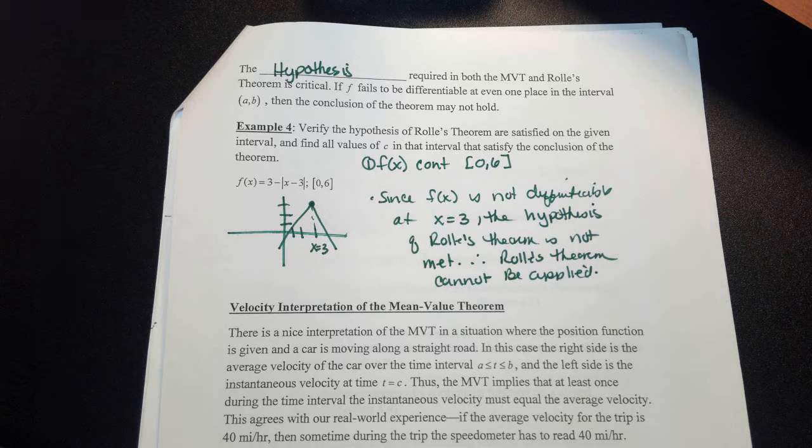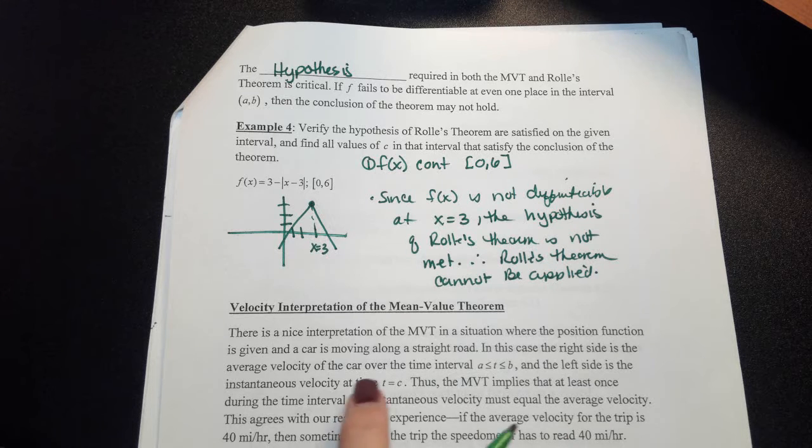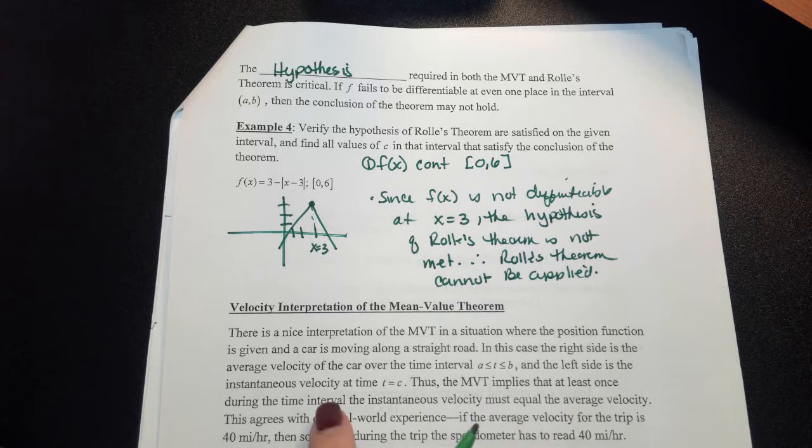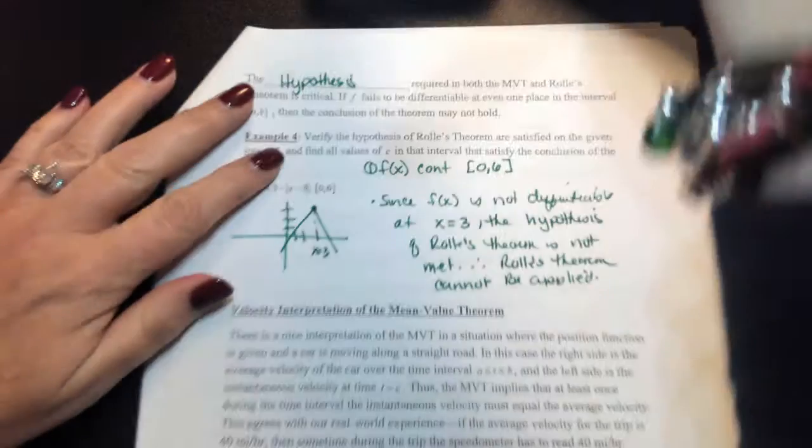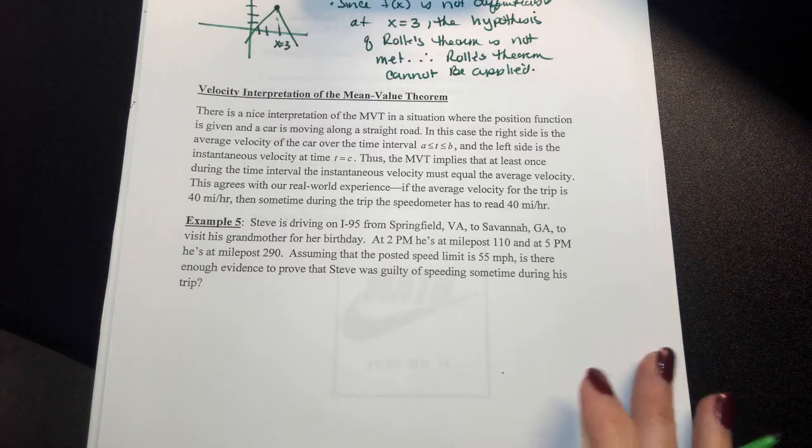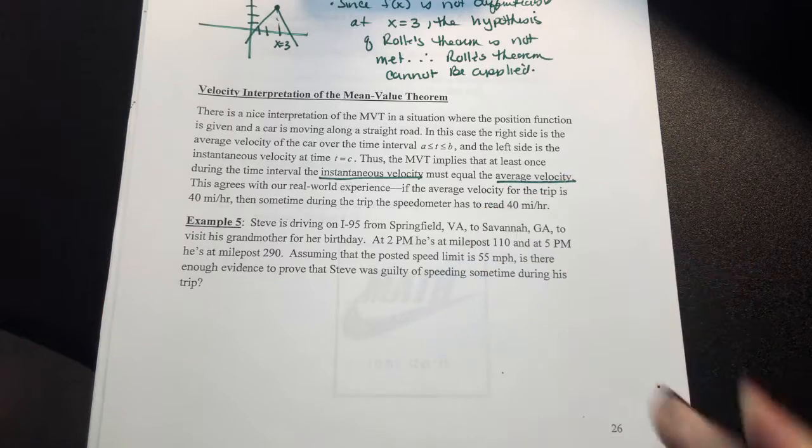Another last thing on mean value theorem is an application which involves velocity where the position of a car is moving along a straight road. In this case, we can look at the average velocity and the instantaneous velocity. Therefore, we can apply the mean value theorem at least once during the time interval where your instantaneous velocity must equal the average velocity.